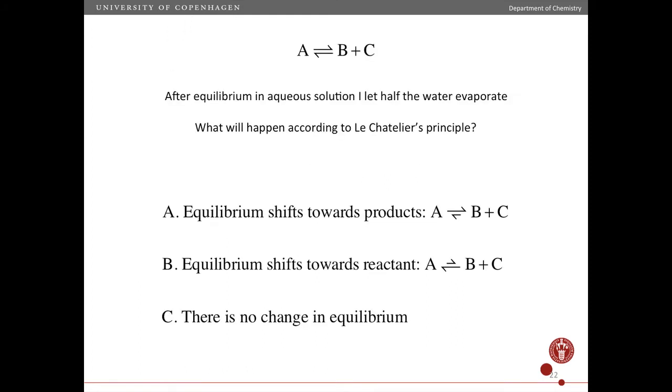Okay, so here I have another equilibrium. Now A is the reactant again, and I now have B and C as products. So this is at equilibrium, and let's say I place this in an open container and I let half the water evaporate. So what will happen according to Le Chatelier's principle?